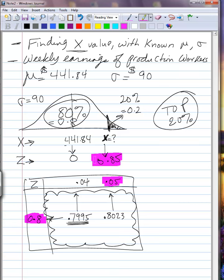Here's the z value. Now, we know that z is equal to x minus mu over sigma. So, we plug in here what we know. We know our z is 0.85. We don't know our x. We know our mu is 441.84. I'll write it over again. x minus 441.84. And we know our sigma, our standard deviation is 90.